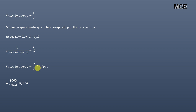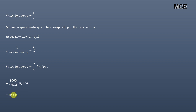Converting to meters, multiply by 1000: minimum space headway = 2000 / kj = 2000 / 194.4 = 10.3 meters per vehicle. This means the minimum space headway at capacity flow is 10.3 meters between two vehicles. This is how you calculate traffic flow parameters from the speed-density relationship.